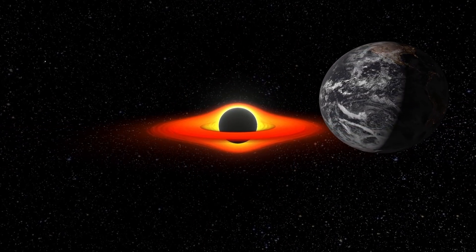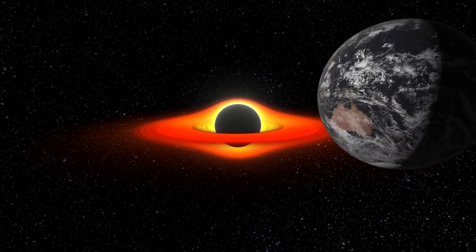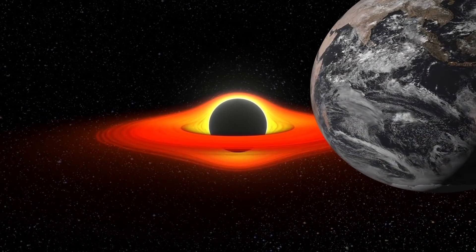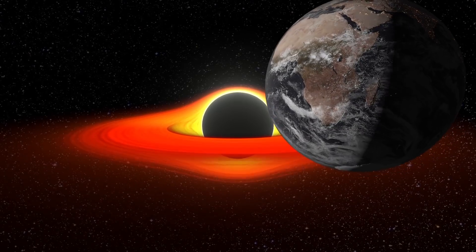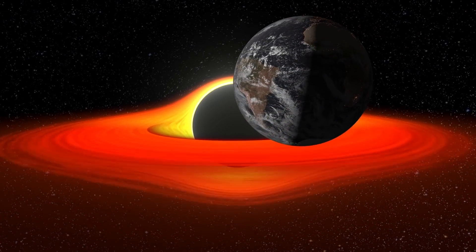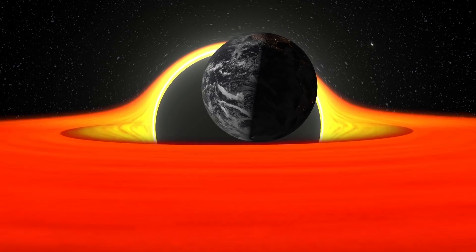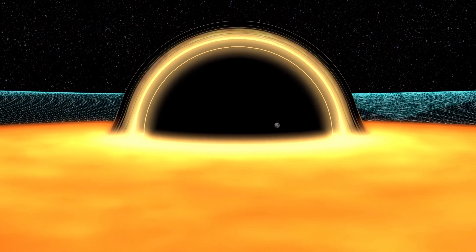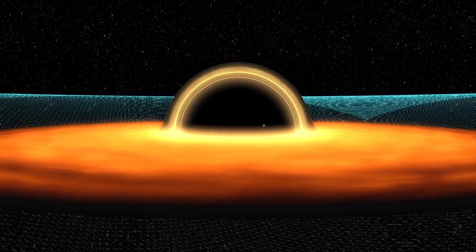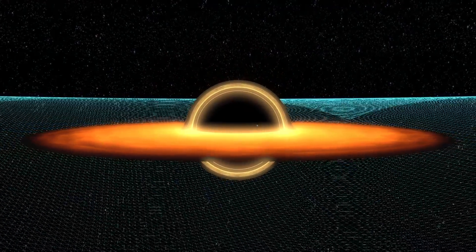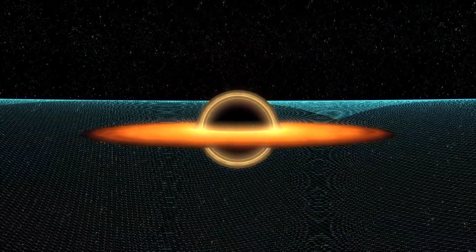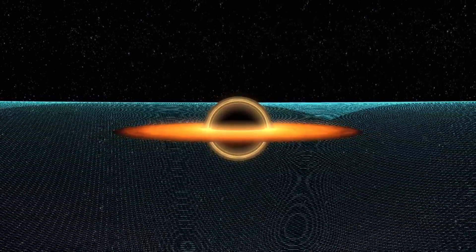Because of this, we wouldn't feel the extreme impact until we were very deep inside it. Simply put, the Earth could pass the event horizon before spaghettification. To anyone watching this process from the outside, it would seem that the planet was gradually slowing down and then beginning to melt.